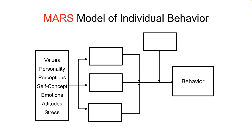Each of these characteristics represents what is different about people. Some of them are quite stable over time, like personality. Others are only slightly more malleable, like values and self-concept. The others are more like states than traits — they include perceptions, which can vary wildly within a person regarding the exact same phenomena from one minute to the next. Others in this category of extremely malleable characteristics include emotions, attitudes, and stress. These individual differences are all antecedent to the mediators of motivation, ability, and role perceptions, which are the MAR of MARS.